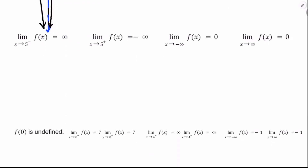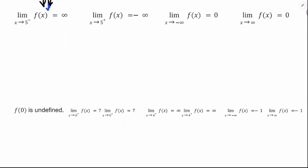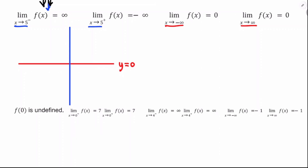Here's another one with one horizontal and one vertical asymptote. As x approaches positive and negative infinity, the limit is 0, so the horizontal asymptote is y equals 0 — which is the x-axis. The vertical asymptote is at x equals 5, since approaching 5 from either side gives infinity. Draw the vertical asymptote at x equals 5 and then sketch the curve respecting both asymptotes.